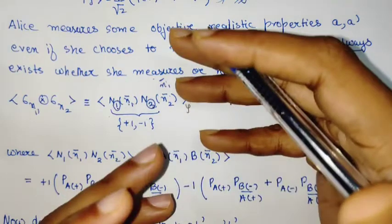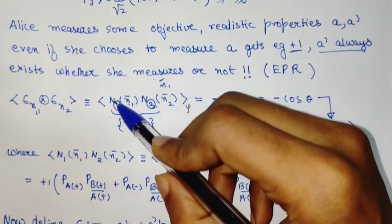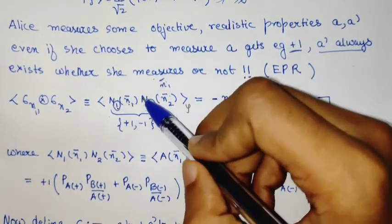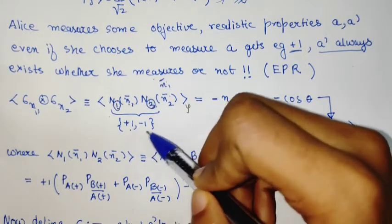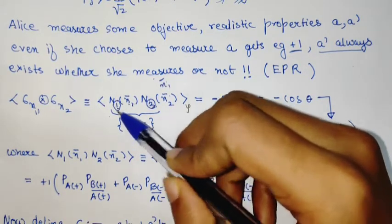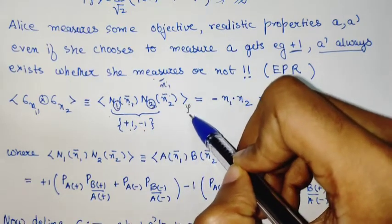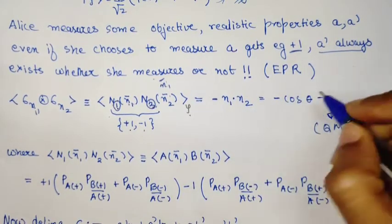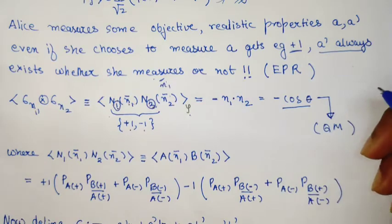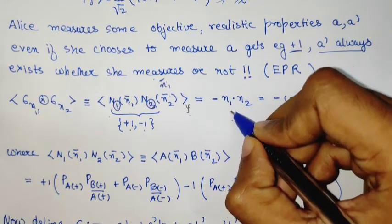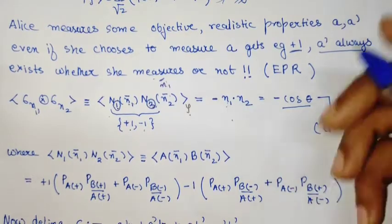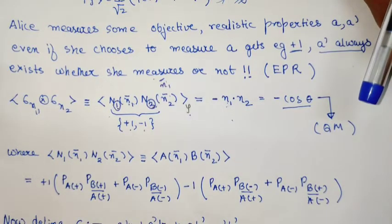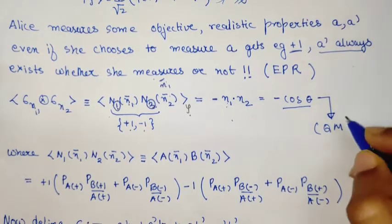This product is a variable that can take value +1 or -1. Its expectation value over the singlet state is given by -cos θ, where θ is the angle between axes N₁ and N₂. This is just the dot product, the quantum mechanical result.